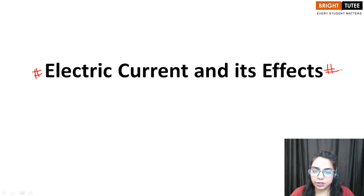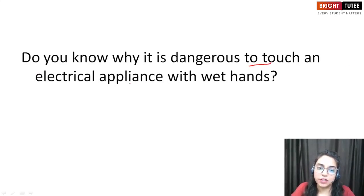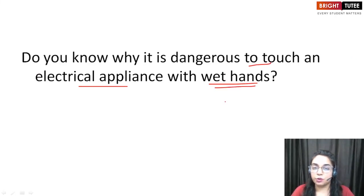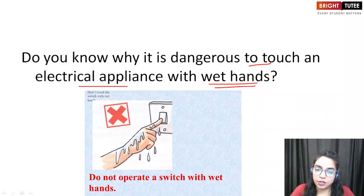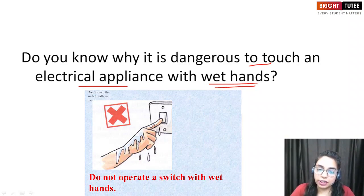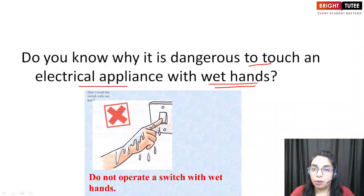So in the introduction, students, we have a question for you. Do you know the reason why it is dangerous for us to touch an electrical appliance with wet hands? The reason is, since our hands are wet, we have a certain amount of water on our hands, and water is a good conductor of electricity. So we can get an electric shock if we touch electrical appliances with our wet hands.